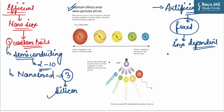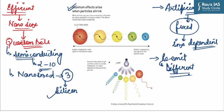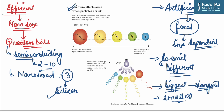Quantum dots exhibit special properties when they interact with light. In general, the color of any material depends on the wavelengths of light absorbed or reflected by the material. However, quantum dots made from the same material will re-emit different colors of light depending on their size. The biggest quantum dots produce the longest wavelengths, while the smallest dots produce shorter wavelengths and higher frequencies.